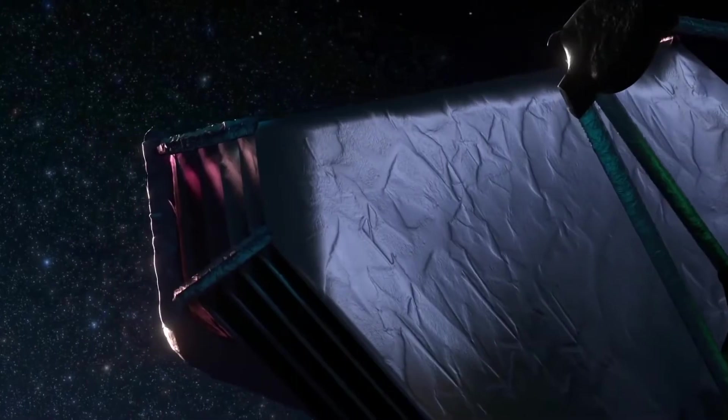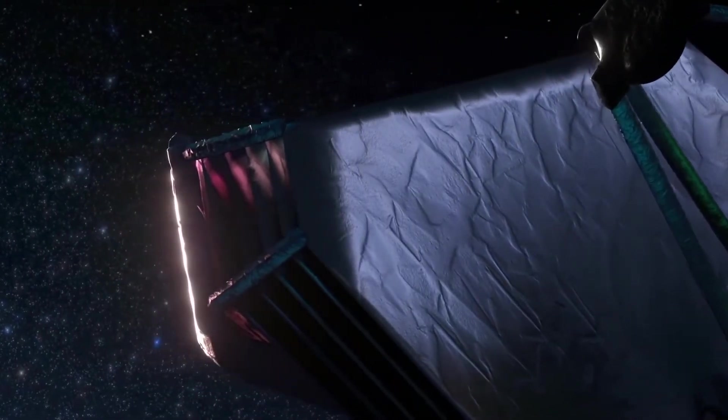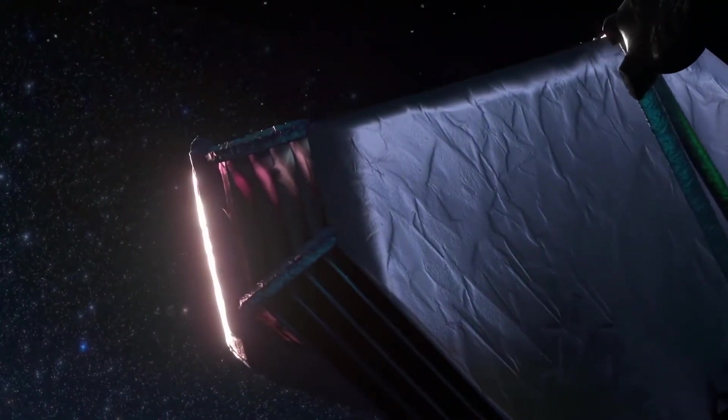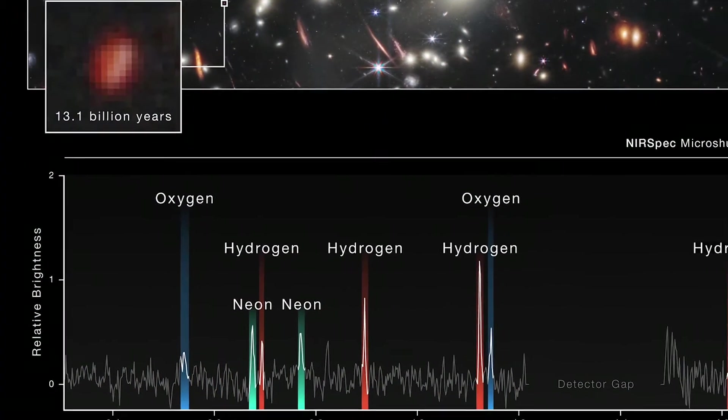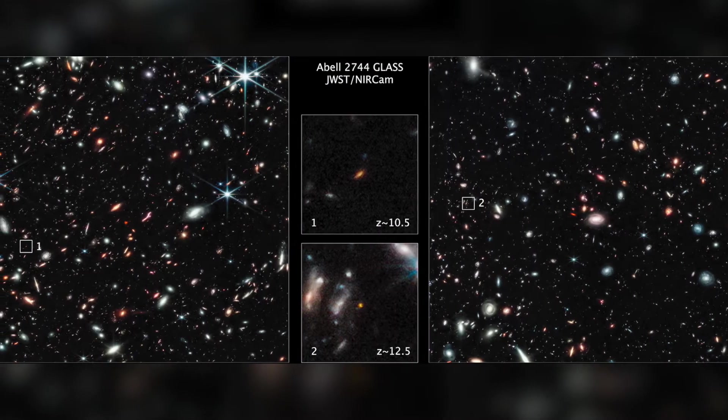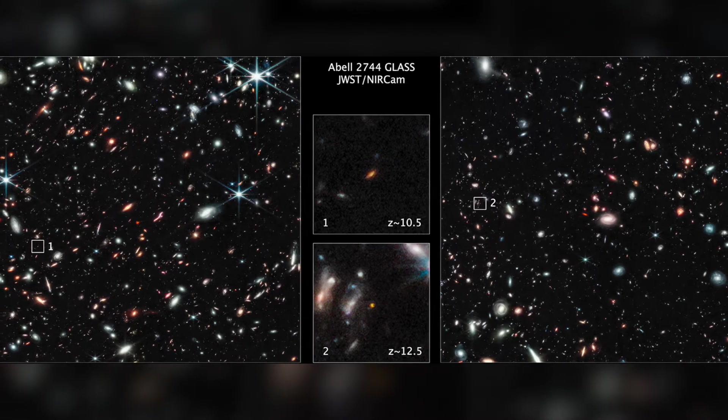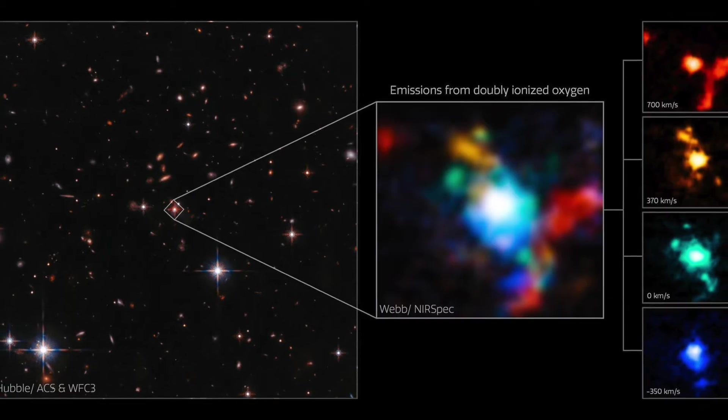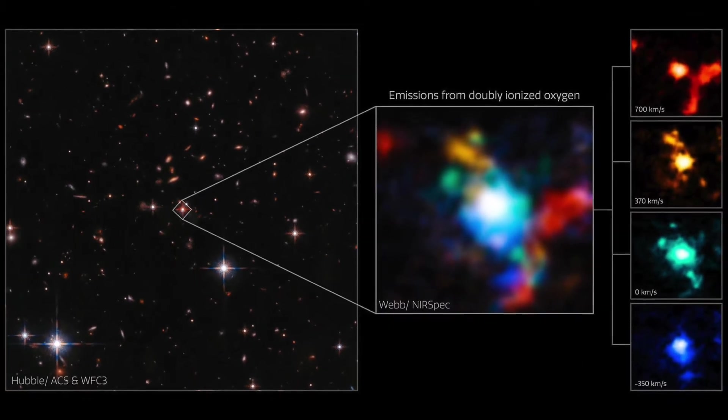However, the James Webb Space Telescope has already turned its gaze back in time towards the Big Bang and has picked up some new information about the very first galaxies that formed within the first billion years of the universe, which is a great step in learning about the birth of the universe.